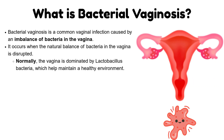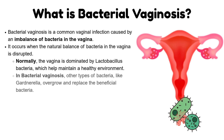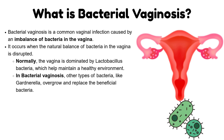Normally, the vagina is dominated by lactobacillus bacteria, which help maintain a healthy environment. In bacterial vaginosis, other types of bacteria like Gardnerella overgrow and replace the beneficial bacteria.